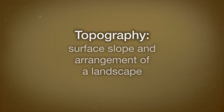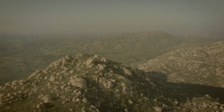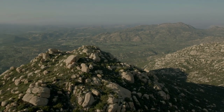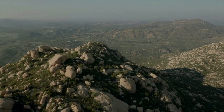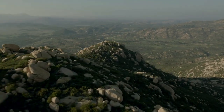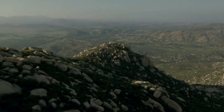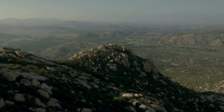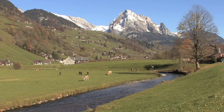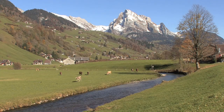Topography is another soil forming factor. Topography is the surface slope and arrangement of a landscape. Soils that form on steep slopes are subject to erosion or sometimes more drastic material movements such as landslides. Soils that form at the bottom of steep slopes are constantly accumulating material from higher elevations, making them quite deep.